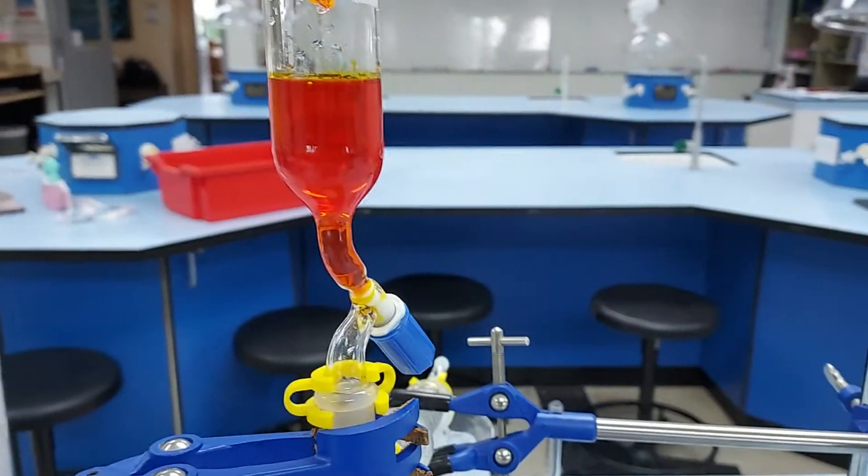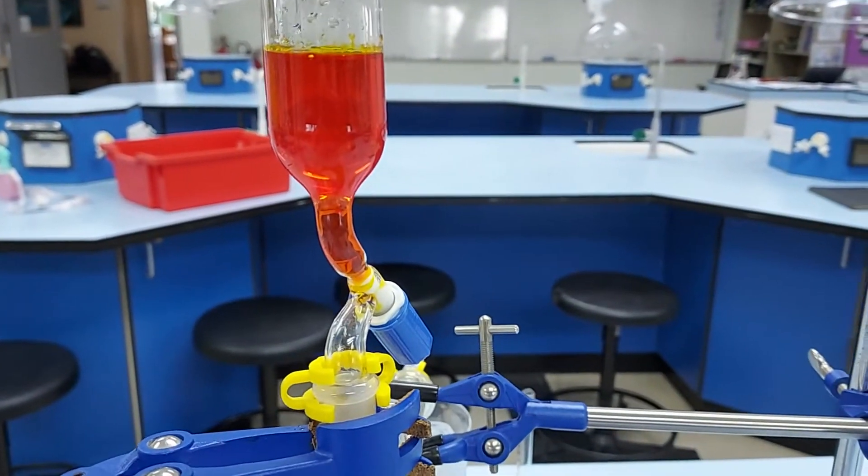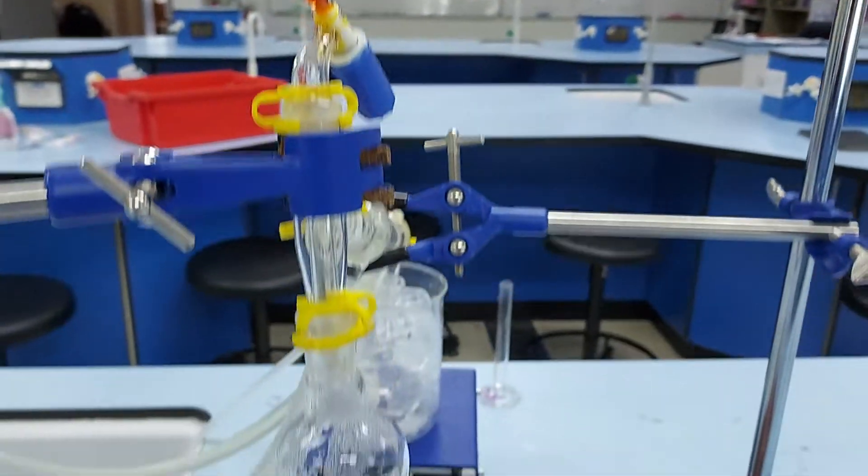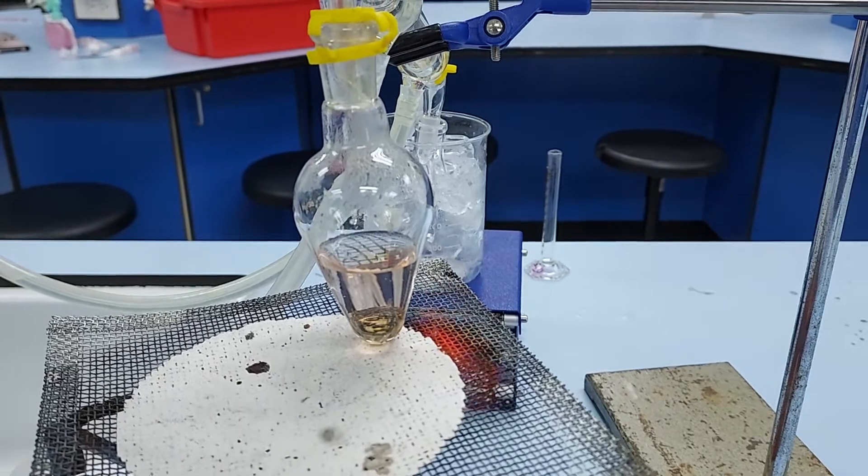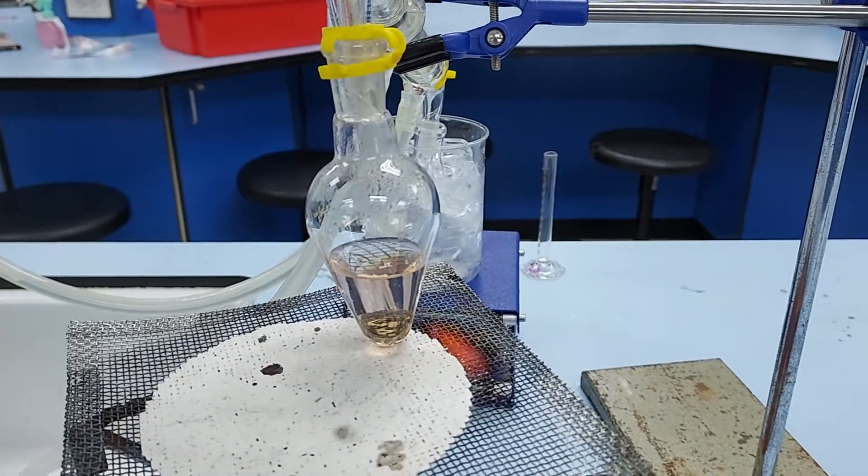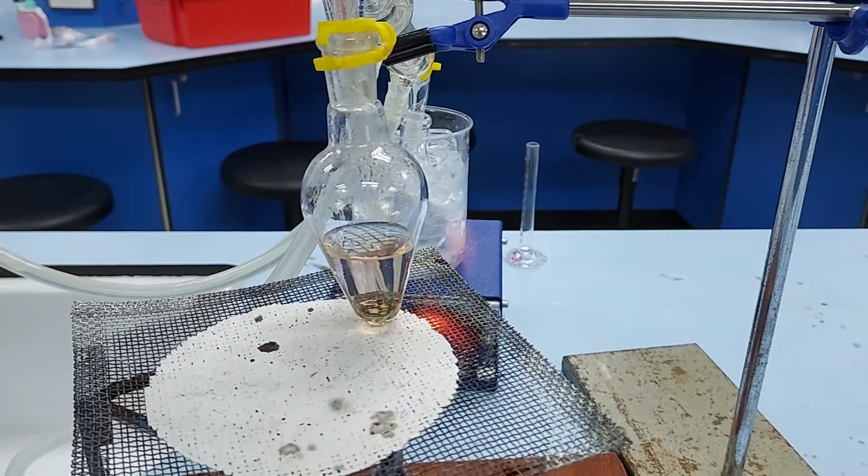In the funnel we've got ethanol and sodium dichromate, and in the pear-shaped flask we've got concentrated sulphuric acid which is mixed with a little bit of water.